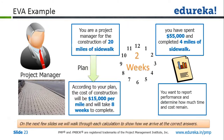We have a quick example to understand that. Suppose you are the project manager for construction of 20 miles of sidewalk. According to your original estimation, the cost of construction will be $15,000 per mile and it will take eight weeks to complete. You start working on it, and after two weeks you reach a checkpoint and need to do the health check. You realize that you have completed four miles of sidewalk and spent $55,000 in completing that work. Now we need to see how we are doing — are we on track in terms of scope and time or not?